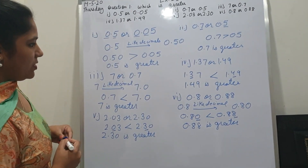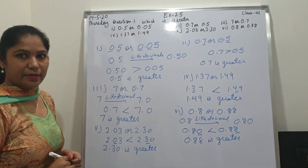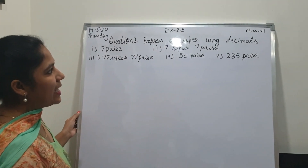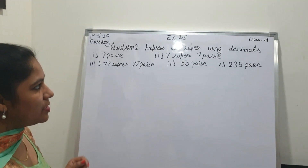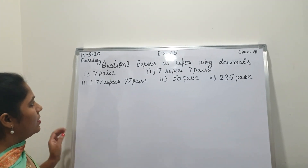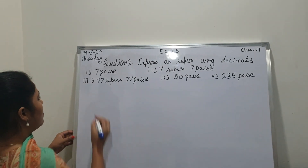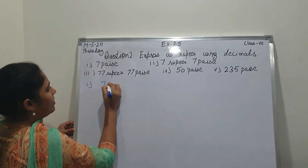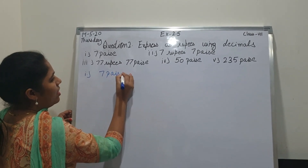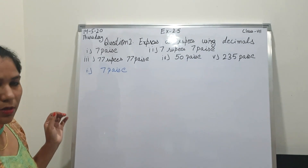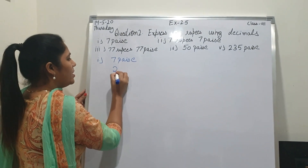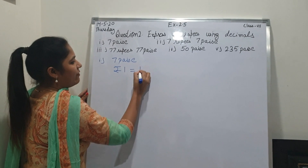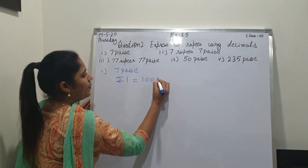So this is your first question. Now we will do the second question. Read the question: express as rupees using decimal. These are the points. Now see the first point, student: 7 paise.